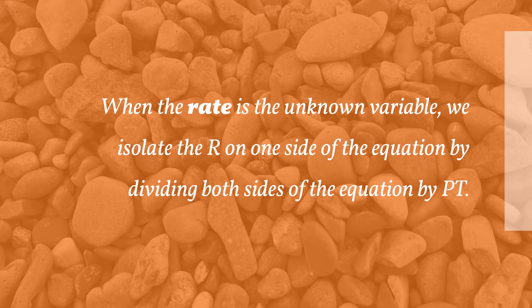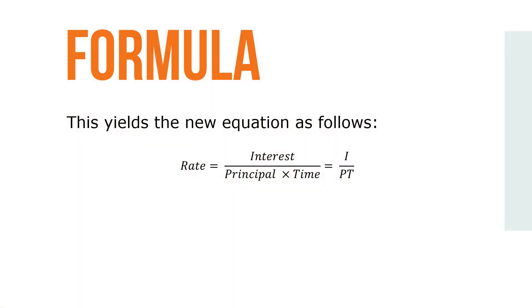When the rate is an unknown variable, we isolate the r on one side of the equation by dividing both sides of the equation by pt. This yields the new equation as follows: rate equals interest over principal times time, or r equals i over pt.